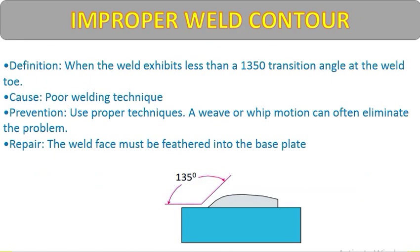Improper weld contour: when the weld exhibits less than a 135-degree transition angle at the weld toe. If less than 135 degrees, stress is generated at the toe and it becomes a defect, potentially causing cracks in the future. Cause: poor welding technique. Prevention: use proper technique — a weave motion can often eliminate the problem. Repair: the weld face must be feathered into the base plate.